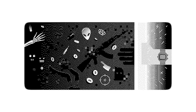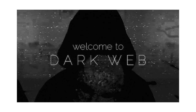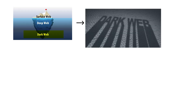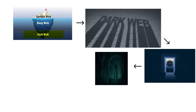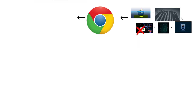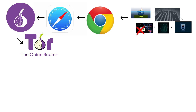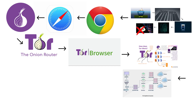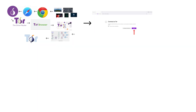This is where the internet stops being polite. The dark web is the shadow under the deep web, where identity dissolves, rules vanish, and light doesn't reach. You can't find this place on Google, and you can't enter it with Chrome or Safari. You need Tor — short for the Onion Router — a special browser that wraps your connection in layers of encryption, bouncing it across random relays around the world. Each node peels away one layer, never knowing the full path.